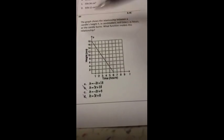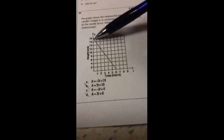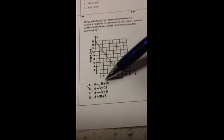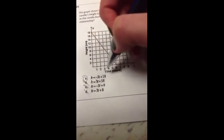You can see that it's starting at 18, so it'd be plus 18. So it would be A, not C, because C is plus 6, not 18.